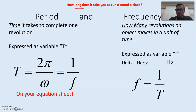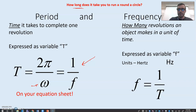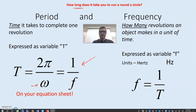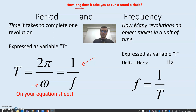This T is also represented on your equation sheet as 2π over omega. This little symbol is omega — we'll talk about that. It's also equal to 1 over the frequency. So let's talk about frequency. Frequency is how frequently something revolves — it's how many revolutions an object makes in a unit of time. Going back to the carousel, I might say I complete three laps per minute — that would be frequency.